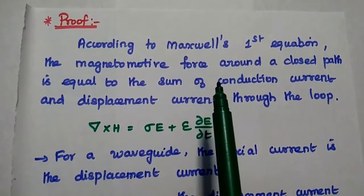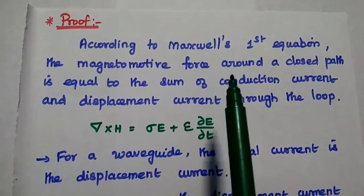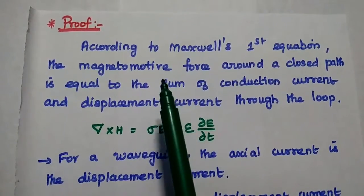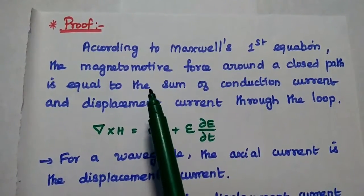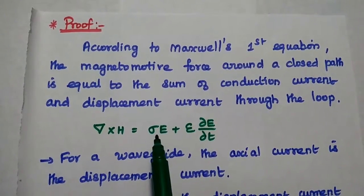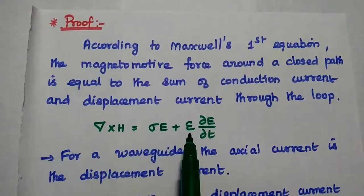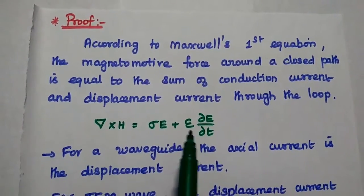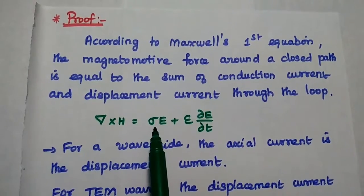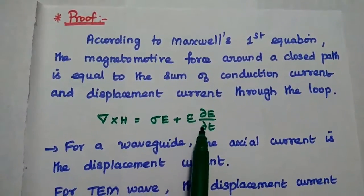Maxwell's equations are mainly used to describe the behavior of electromagnetic waves. According to Maxwell's first equation, the magnetomotive force around the closed path is equal to the sum of conduction current and the displacement current through the loop.